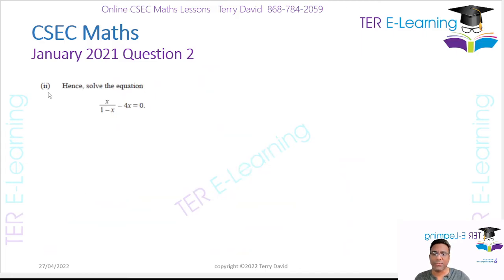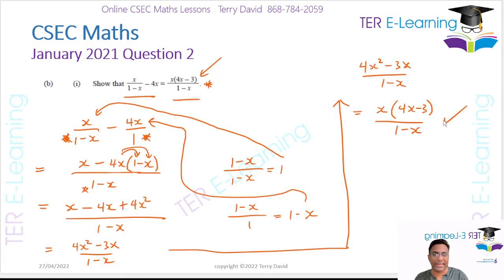In part 2, they want us to solve this equation. So I have x over 1 minus x minus 4x is equal to 0. But if you notice something here, they said hence. So they are asking us about the previous part of the question. So we have just proven that I can write it like this. So I'm going to use that to help me answer this question.